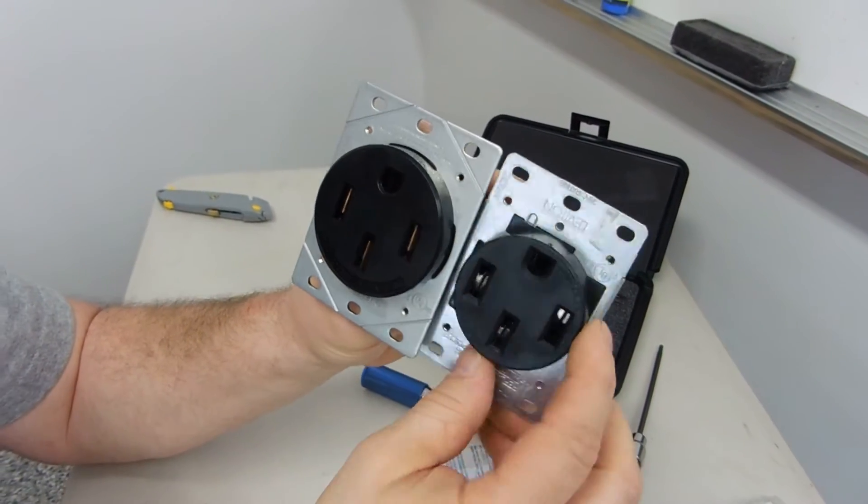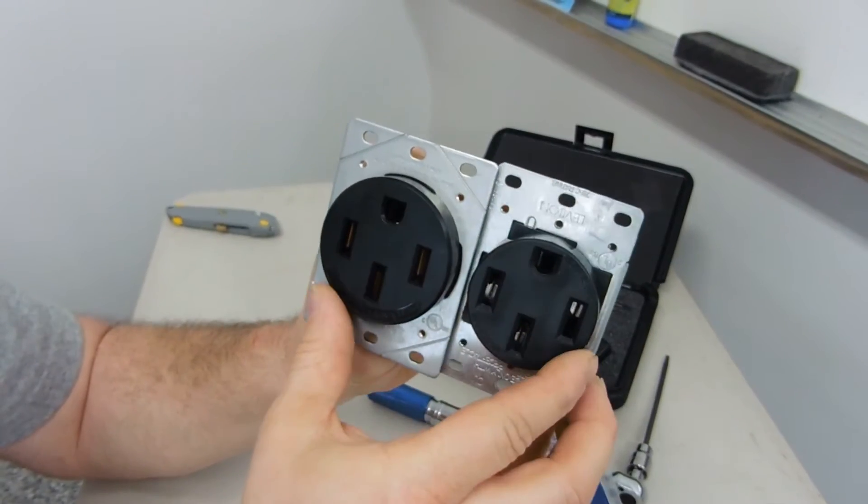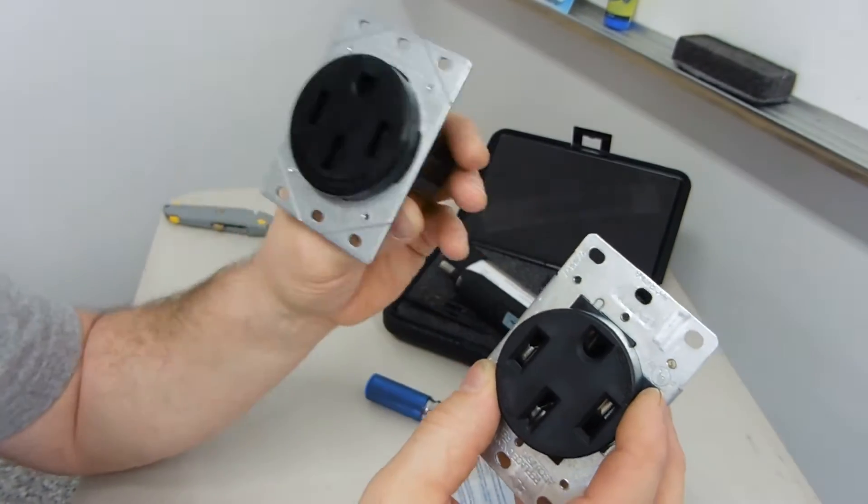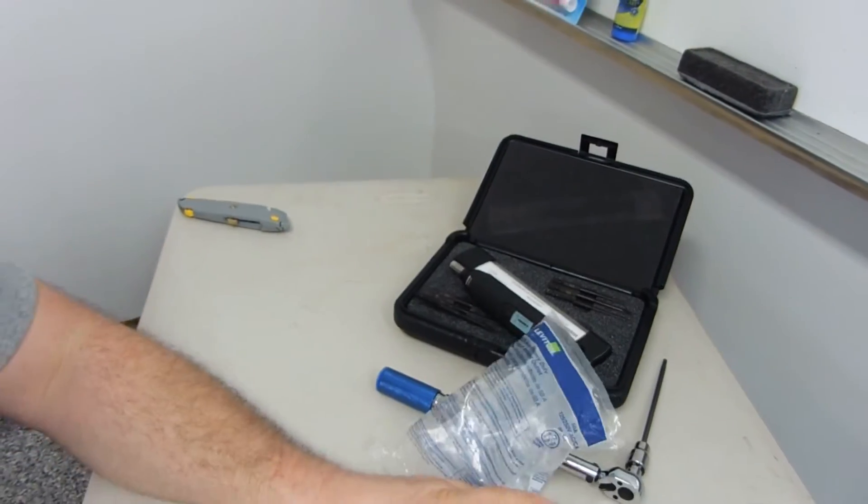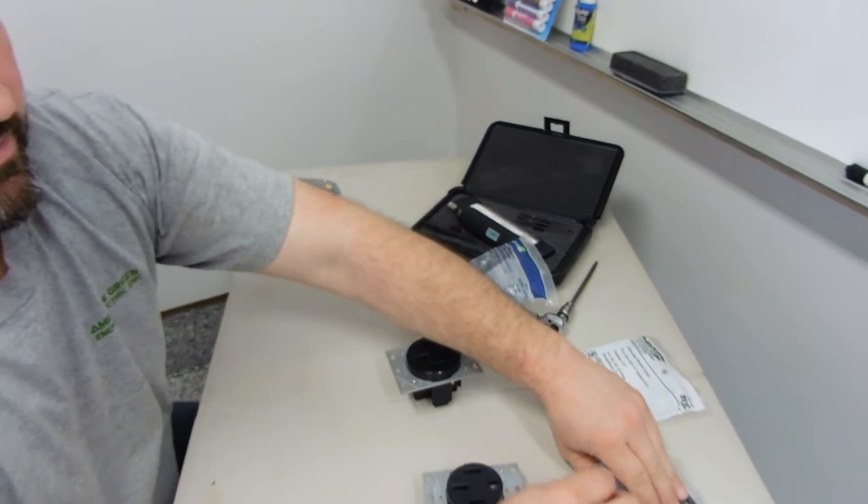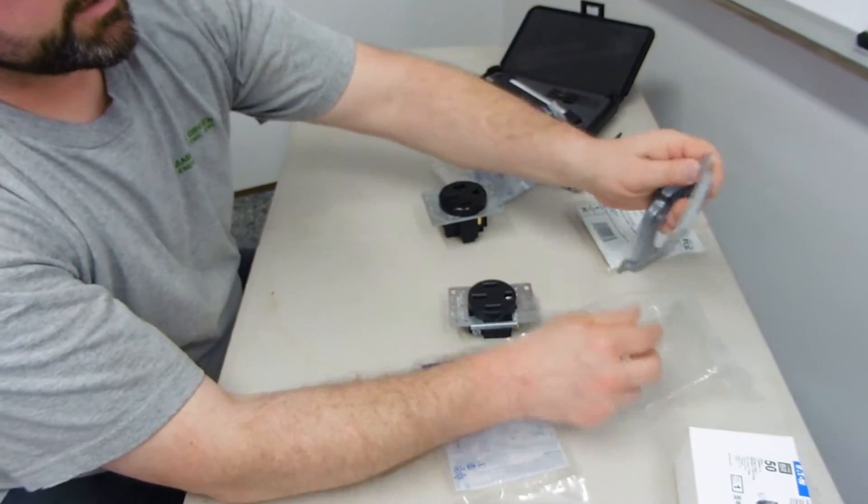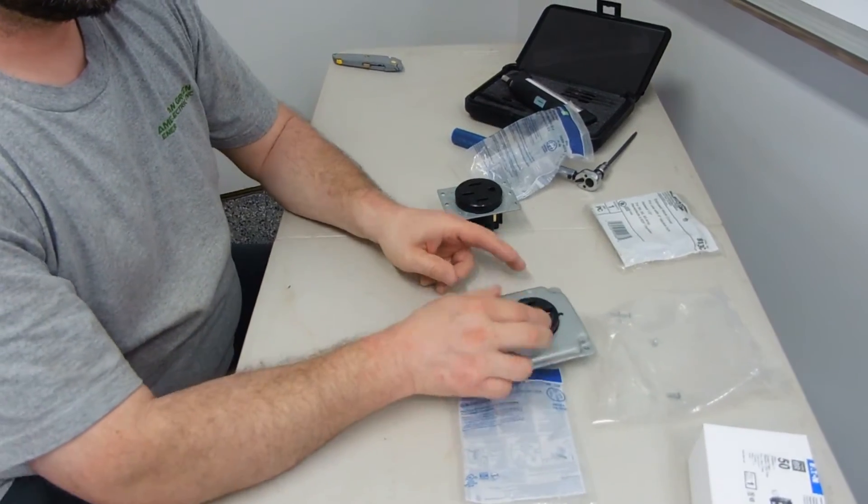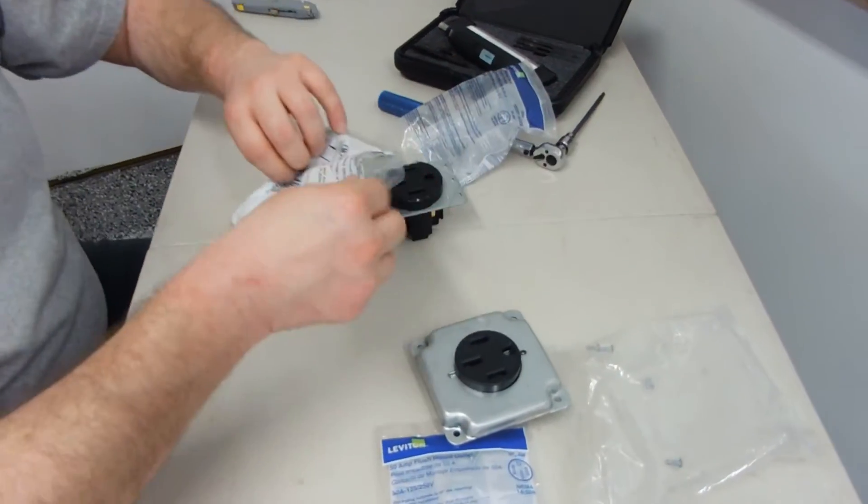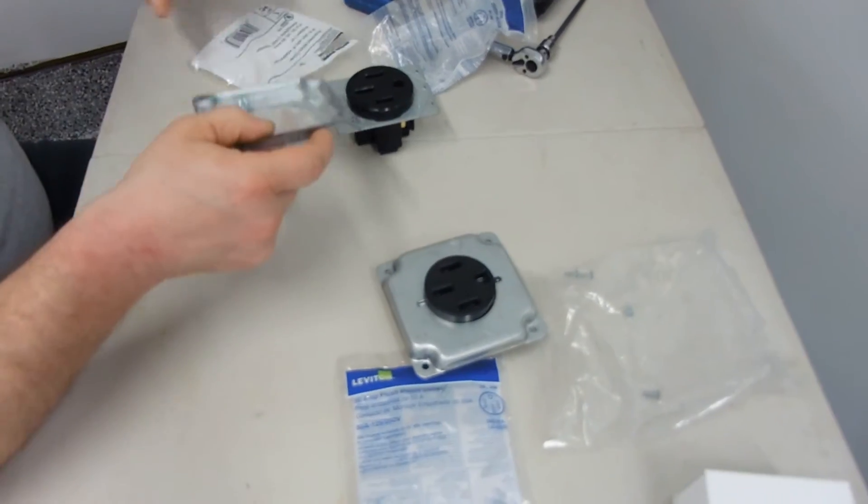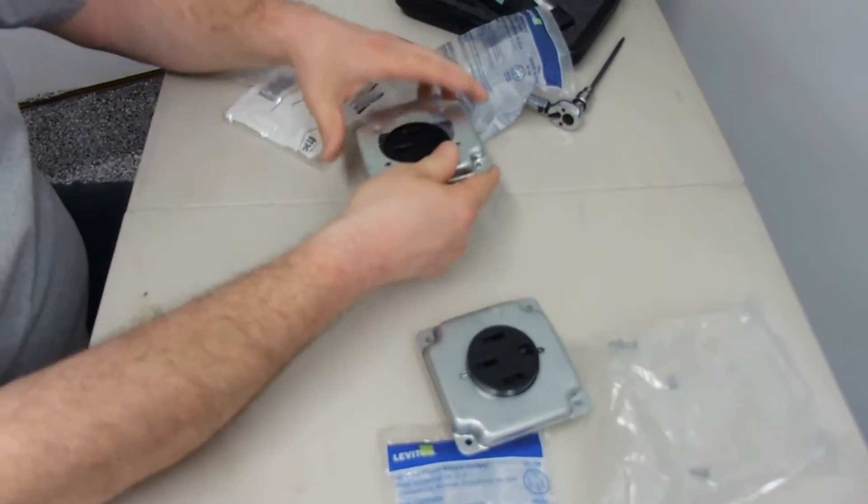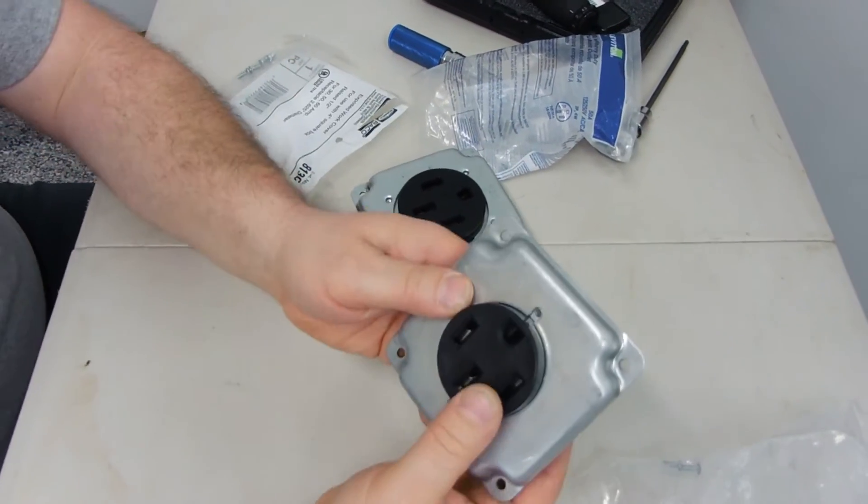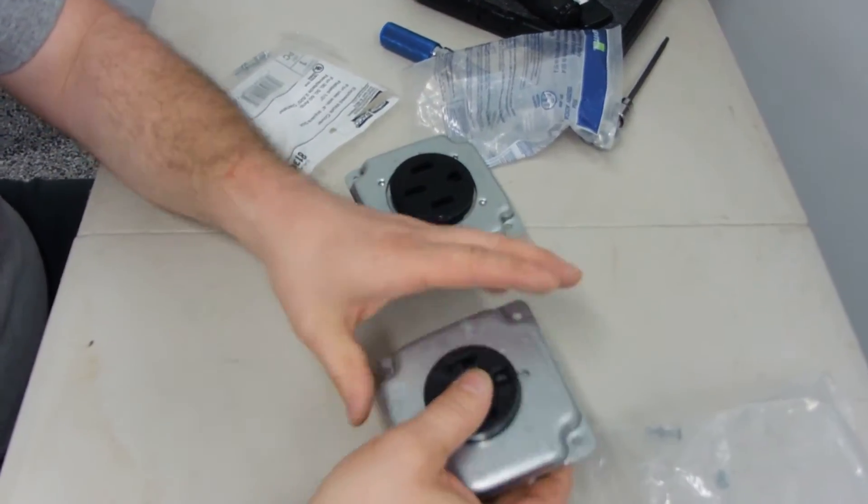So, the noticeable differences is one, obviously, the diameter of the receptacle itself. So, you do need a different cover. I typically just use raised industrial covers for this or you can if you're going outside, you get a weatherproof cover. However, the heavy duty EV is a two and a half inch receptacle. This is two and an eighth.